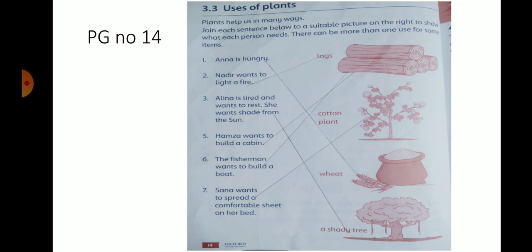Sentence No. 5 is Hamza wants to build a cabin. Hamza cabin build a cabin. So what do we want? Logs, logs. We will match the logs with logs. Sentence No. 6 is The fisherman wants to build a boat. Fisherman, a fish to build a boat. So what do we want to do? We also need logs. Logs, we will match the logs with logs.